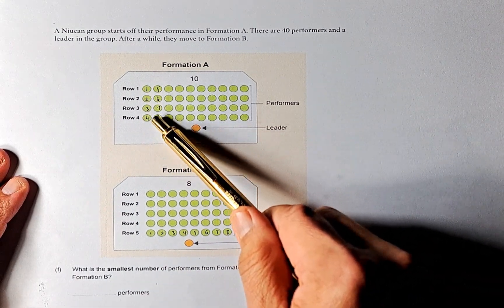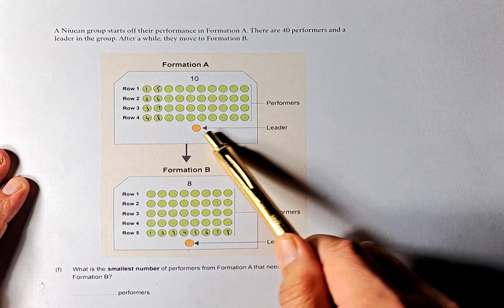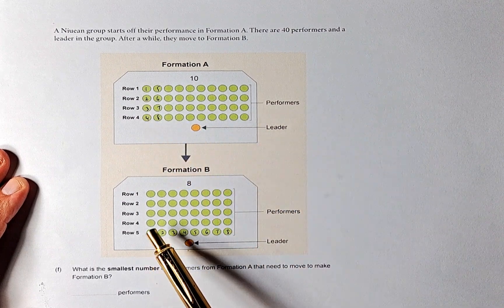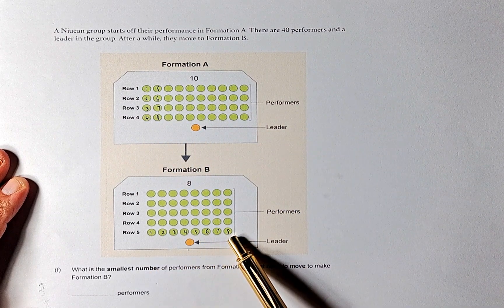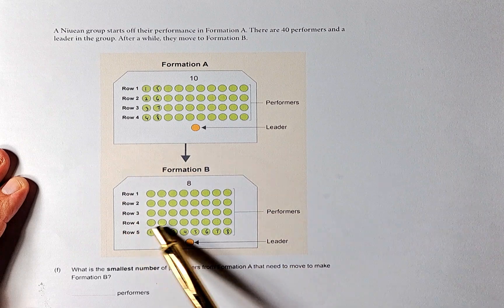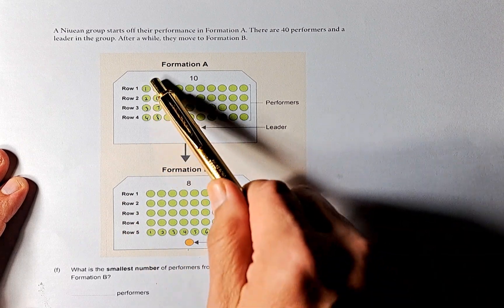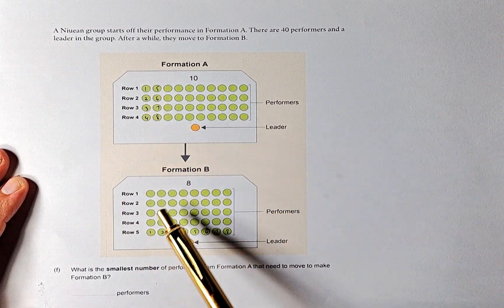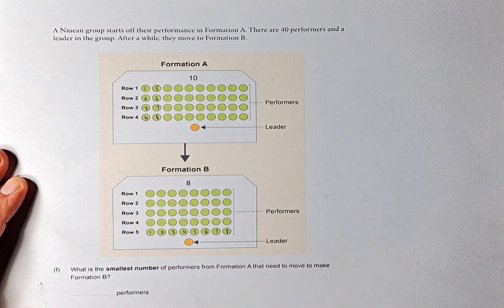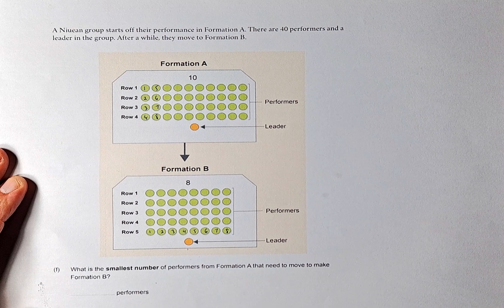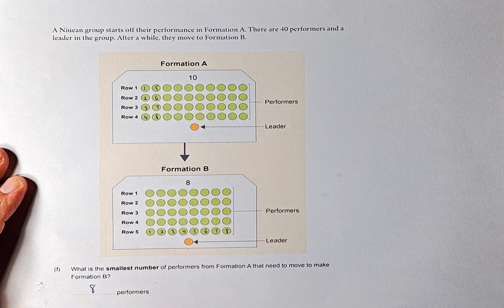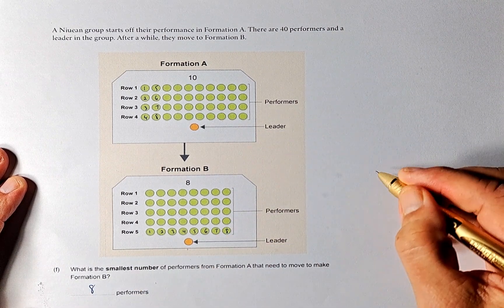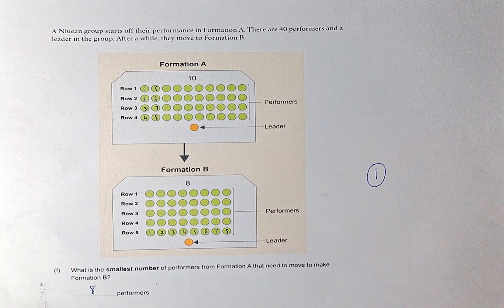If this group goes there and that group goes there, we get 8 performers forming another row. Two columns become another row. So the minimum number of performers that need to move from formation A to formation B is 8. And again, that is Outcome number 1.